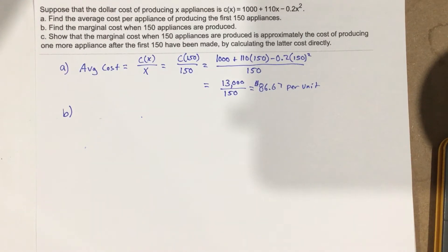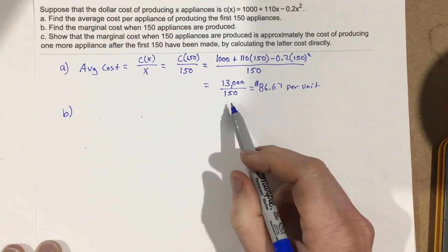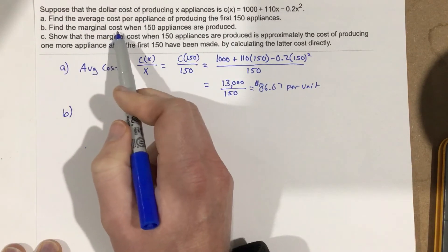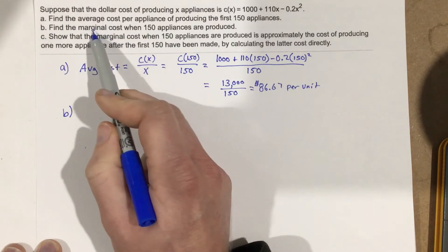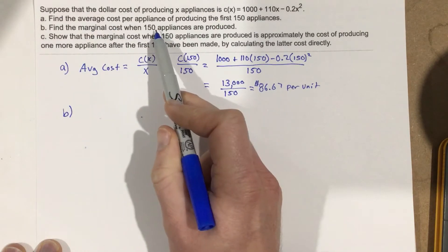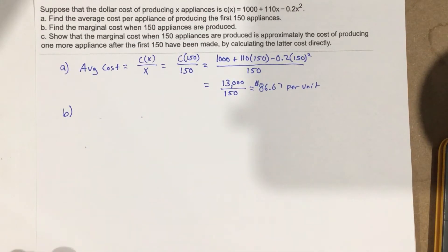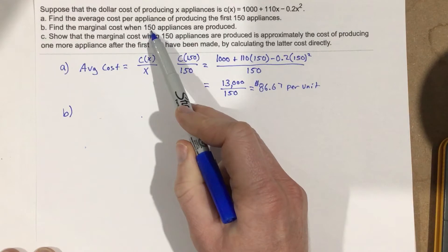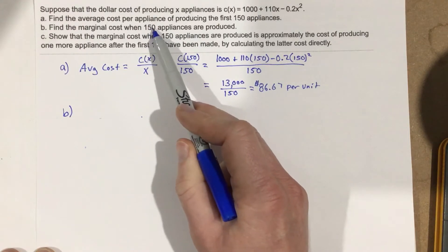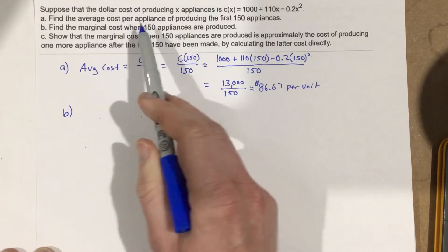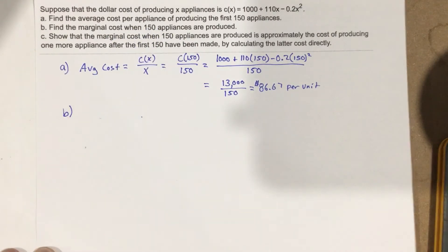You buy the supplies cheaper, then you can mass produce — instead of producing just 10, you can produce 1,000 in a shorter amount of time because you have things set up properly. So your costs as you produce more go down. When they ask for marginal cost, they're really asking: what's the cost for an additional unit beyond these 150 appliances — essentially, what would be the cost for the 151st appliance?